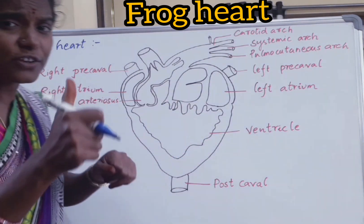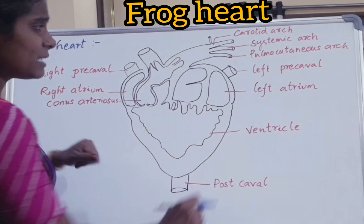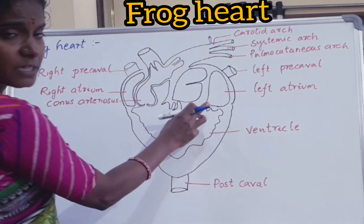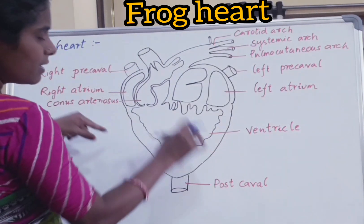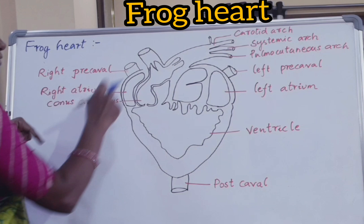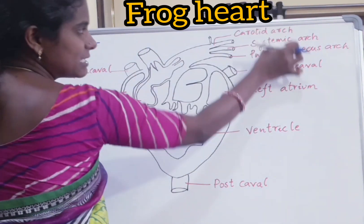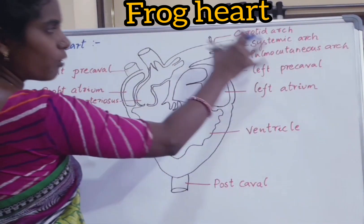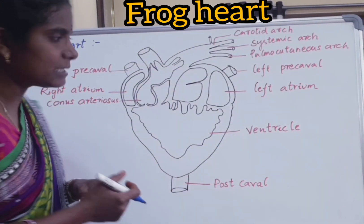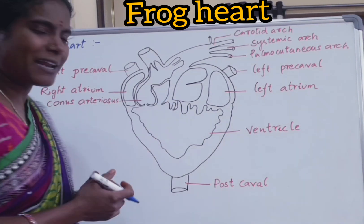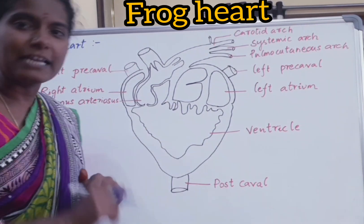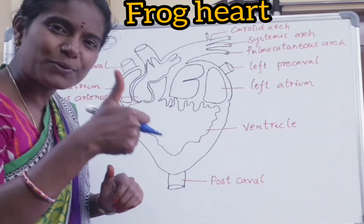Students should write about the chambers of the heart, the blood vessels, how the conus arteriosus splits, and these arches. If you write with proper names, proper spellings, and proper explanation, you will get full marks in the IPE. Thank you.